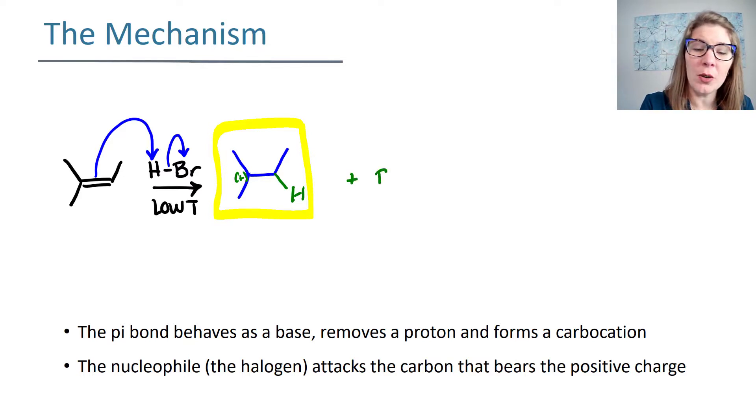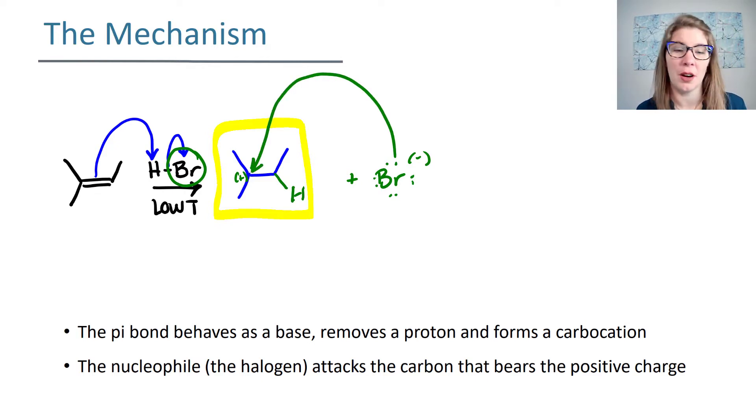Now that we know that the positive charge, the carbocation, is at the more substituted position, remember that you also have bromide ion running around in solution because your bromide was from the HBr. Your bromide is going to behave as the nucleophile, it's going to come in, and it's going to attack the carbon of the carbocation, and you end up getting a product where your bromide has added to the more substituted side.